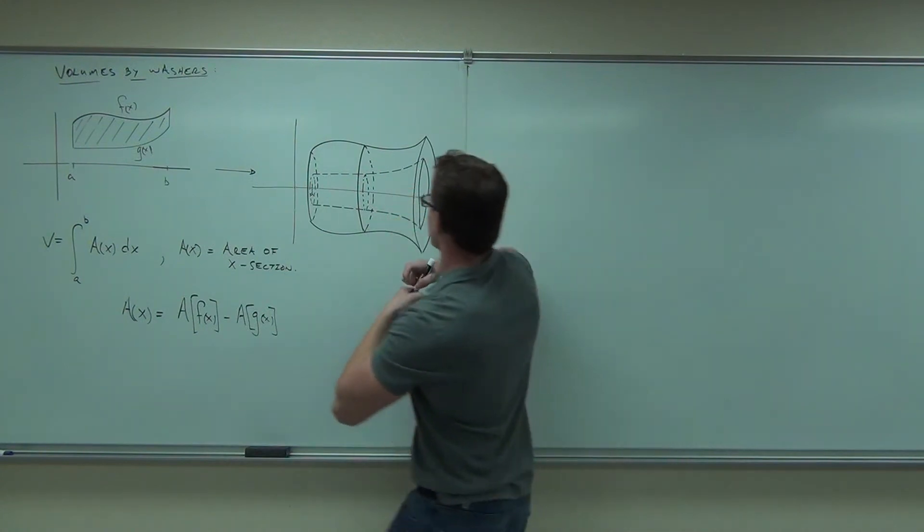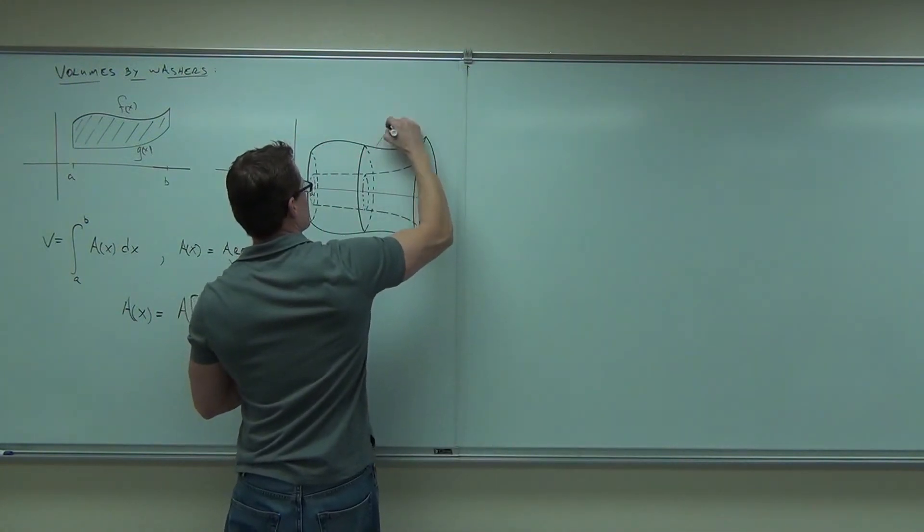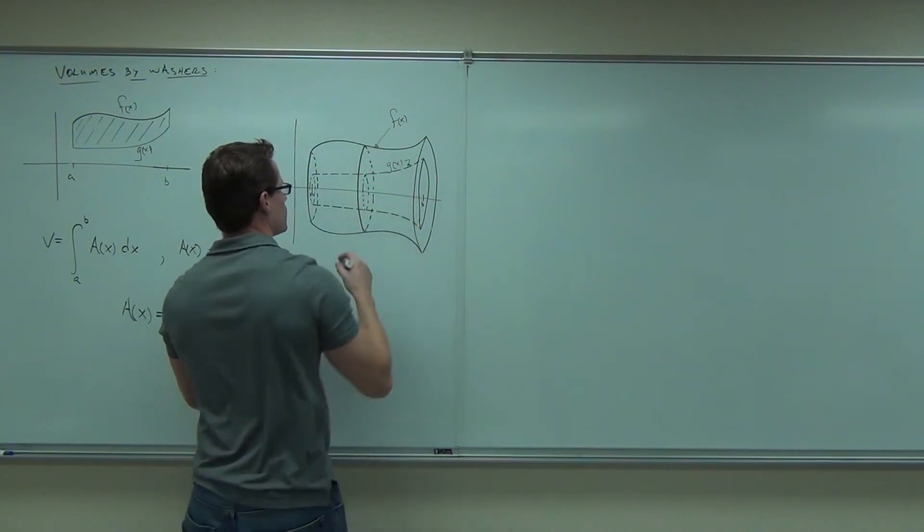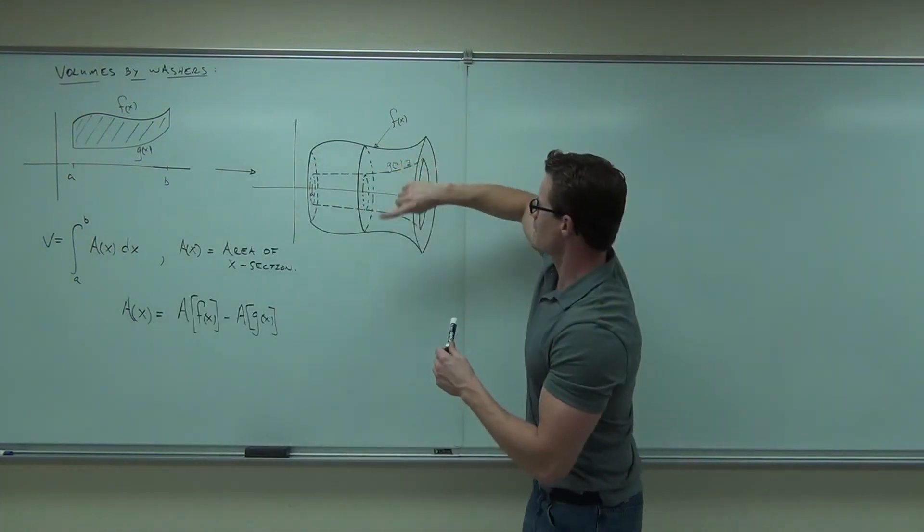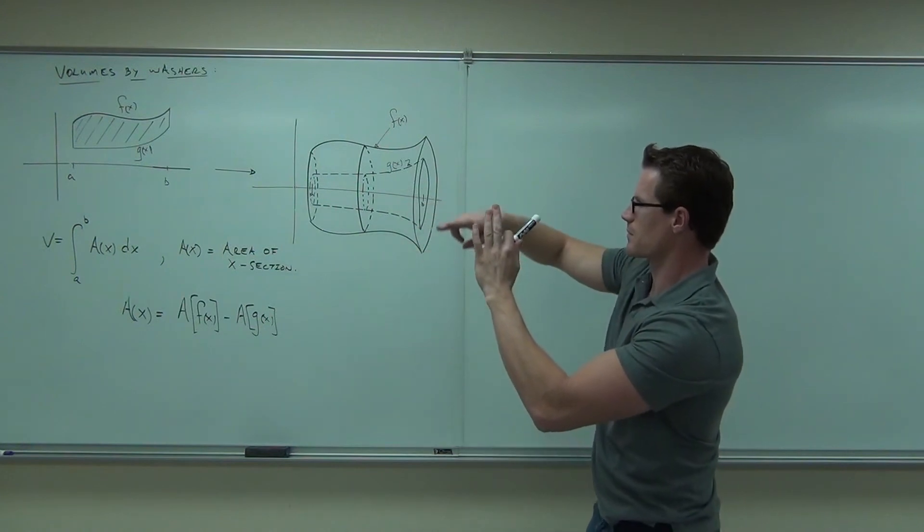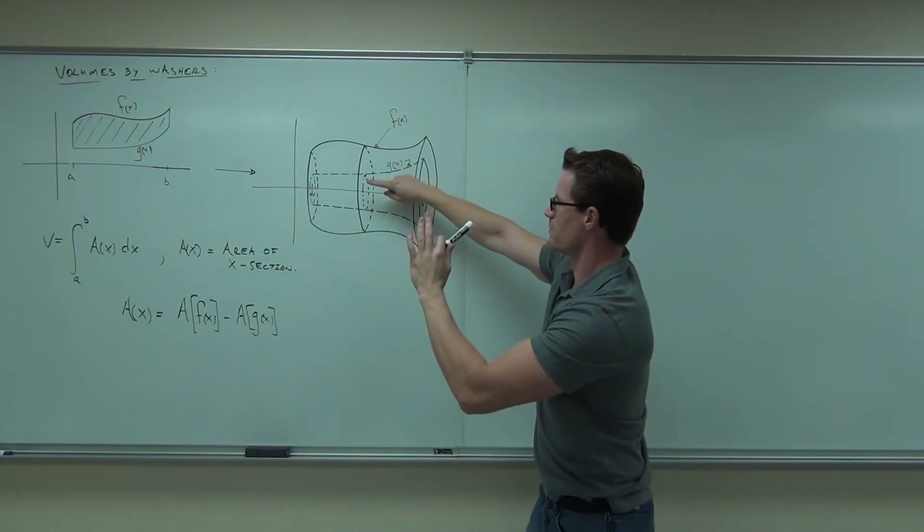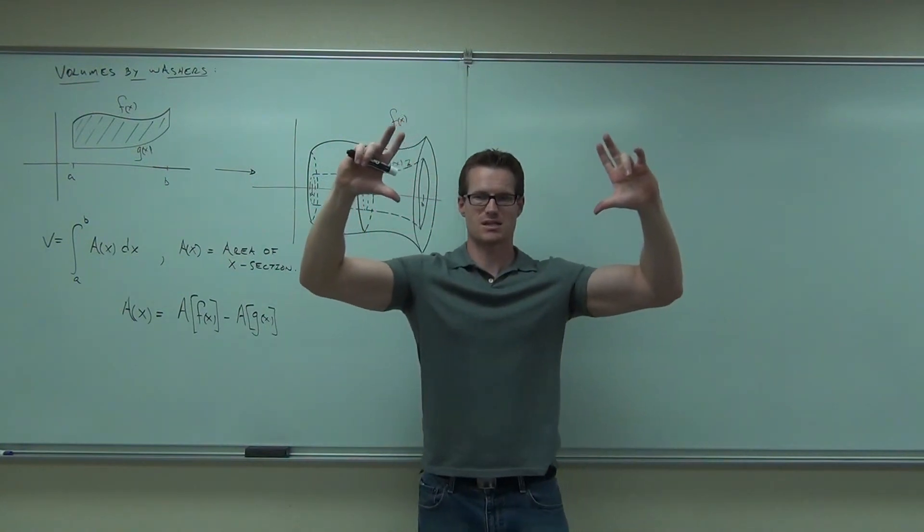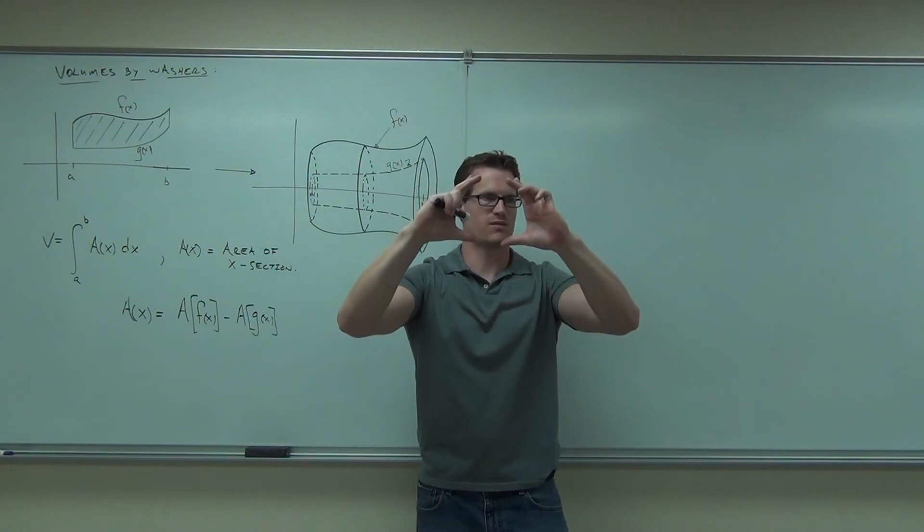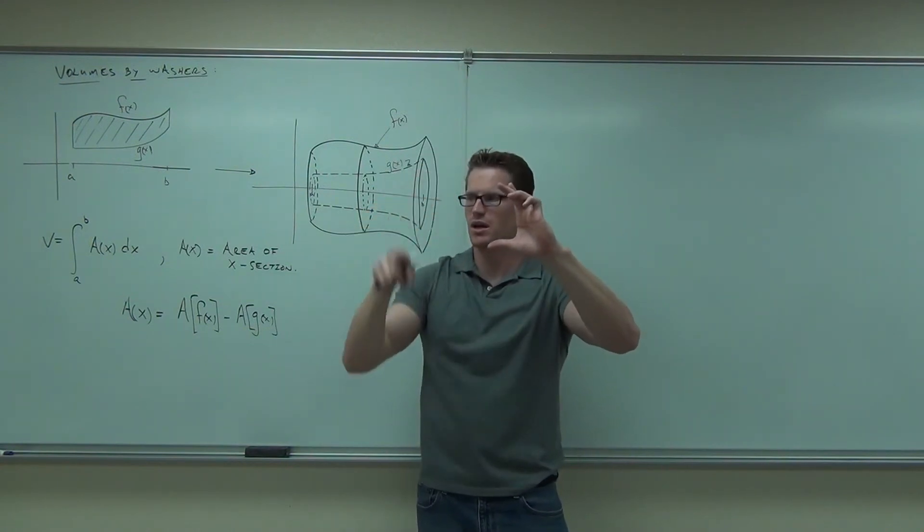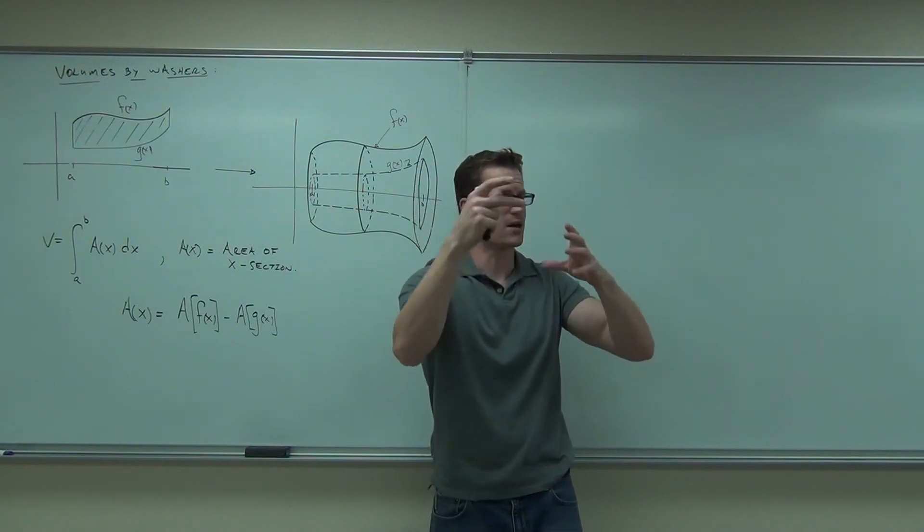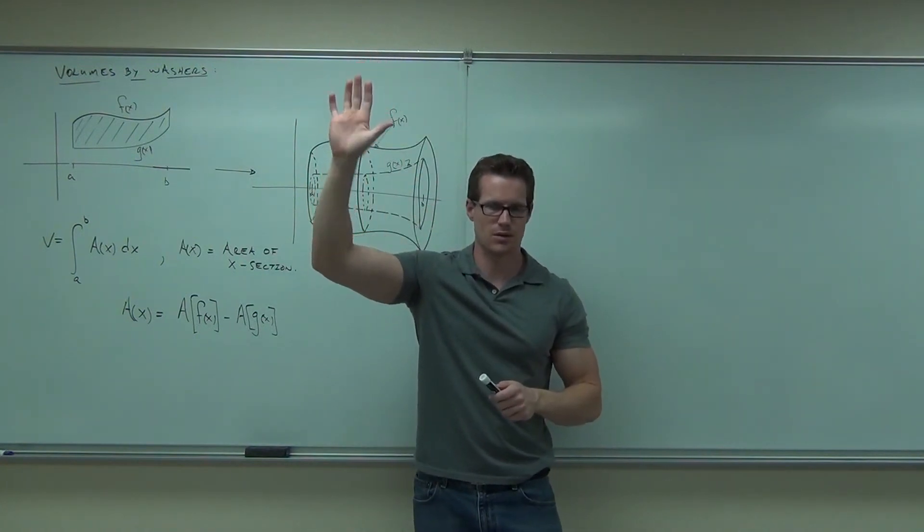I'll try to explain it with the picture again. The area of F of X, remember that this is F of X, this outside one, and this is G of X, this inside one. So if I take the area of the cross-section of F of X, and I take the area of the cross-section at G of X, and I subtract them, basically what I'm taking is a big disk from F of X minus a small disk from G of X. And it's going to give me the region, the difference between those circles, basically. And that's going to be the area between F of X and G of X, which you have to understand that.